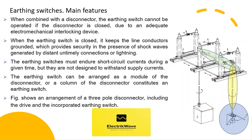When combined with a Disconnector, the Earthing Switch cannot be operated if the Disconnector is closed, due to an adequate electromechanical interlocking device. When the Earthing Switch is closed, it keeps the line conductors grounded, providing security in the presence of shock waves generated by distant untimely connections or lightning. Earthing Switches must endure short circuit currents during a given time, but they are not designed to withstand supply currents. The Earthing Switch can be arranged as a module of the Disconnector, or a column of the Disconnector may constitute an Earthing Switch. The figure shows an arrangement of a 3-pole Disconnector including the drive and the incorporated Earthing Switch.